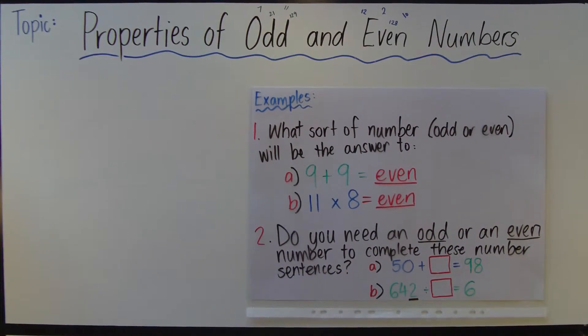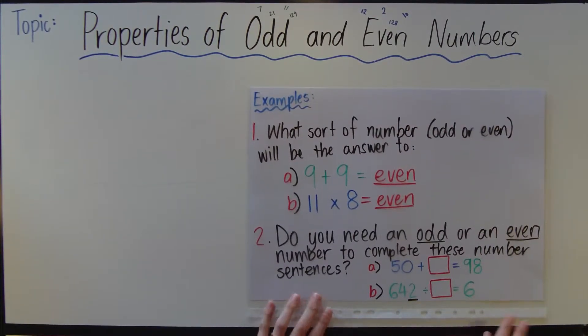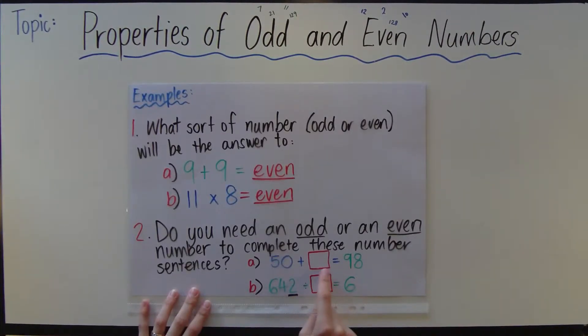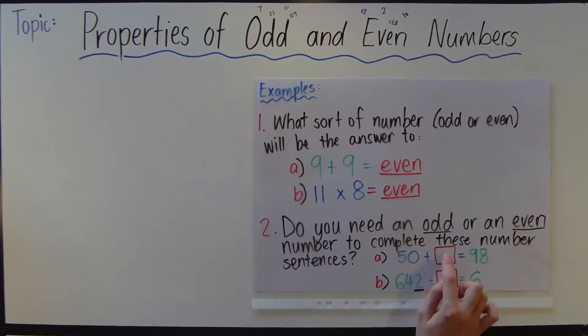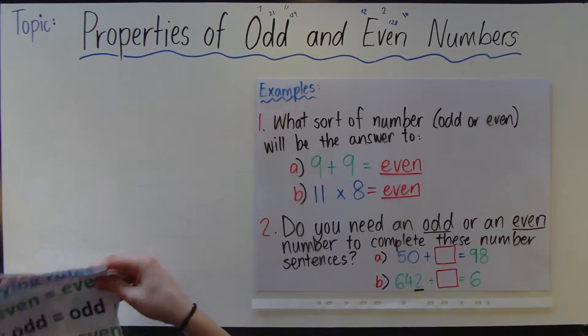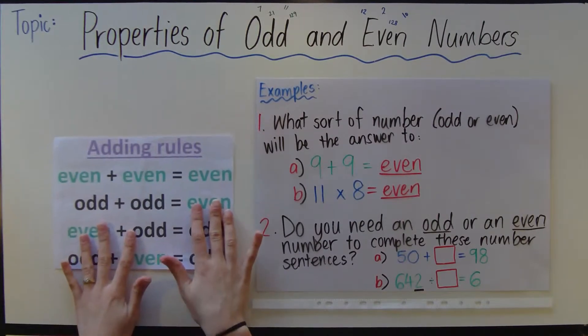Question number 2: do you need an odd or an even number to complete these number sentences? Here we have 50 plus something equals 98. I'm not asking for the actual answer of what it is. I'm just asking for what sort of number, what type of number is missing there. So I know this is an addition one, so I go to the adding rules poster.